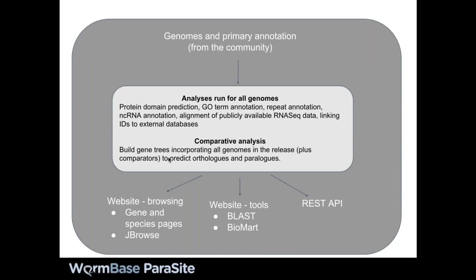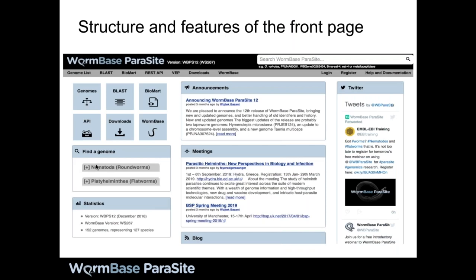I'm going to hand over to Vojtek now, who's going to start taking you through the mechanics of browsing the website. Here is our front page. The tools that Faye has talked about — the things we hope people will use the most — are available from here: links to BLAST, the API, and BioMart. The search box is very useful if you know what you're looking for, and if you want to see what genomes we have, I always use this link that gets me to this list.